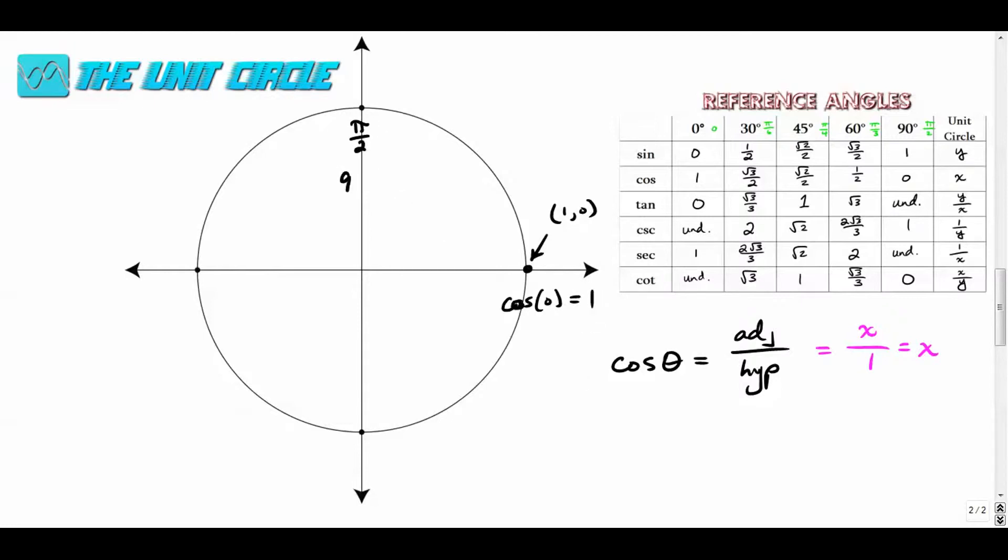Up here at 90 degrees or pi over two radians, all right, this point is zero comma one. So the cosine of pi over two is the x value at that point. Over here at pi radians or 180 degrees, this point is negative one comma zero. So the cosine of pi is negative one. It's the x value. Down here, we have zero negative one. So this is three pi over two radians or 270 degrees. So the cosine of three pi over two is the x value. It's zero.